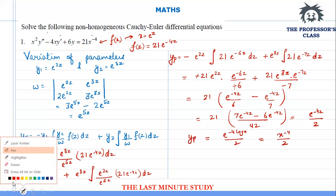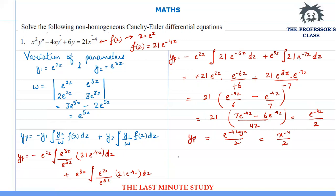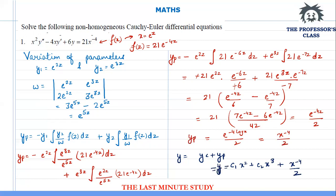The final answer is the sum of yc and yp. So y equals c1·x² plus c2·x³ plus x^(-4)/2. This is the final answer for part 1.